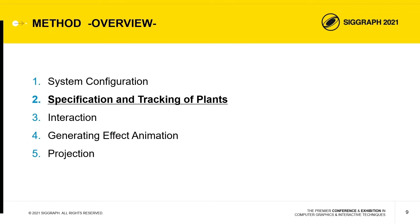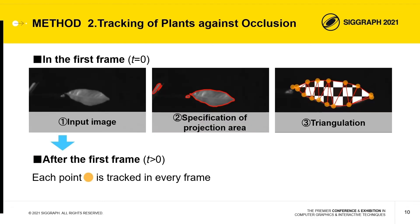Next, we'd like to talk about specification and tracking of plants. In the first frame, projection areas are specified. Creators specify a projection area among contours extracted from an input image, and each projection area is divided into triangular meshes to map the effect animations. After the first frame, each tracked point is tracked in every subsequent frame.